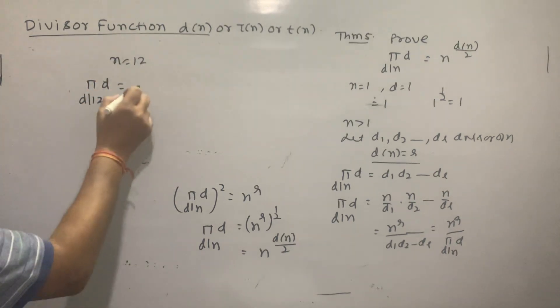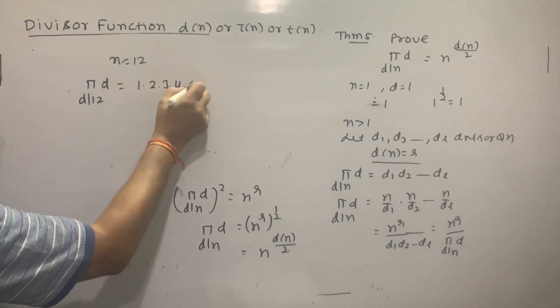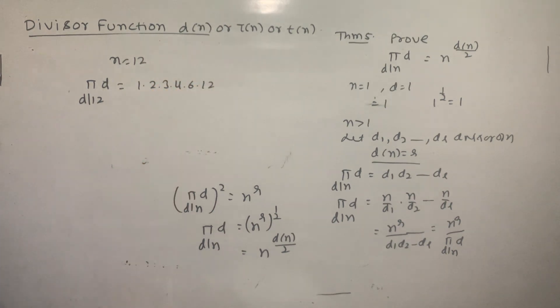The divisors of 12 are 1, 2, 3, 4, 6, 12. The left hand side: product equals 1 × 2 × 3 × 4 × 6 × 12 = 1728.